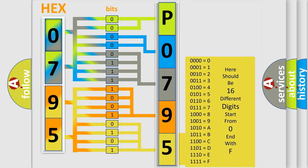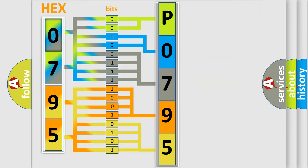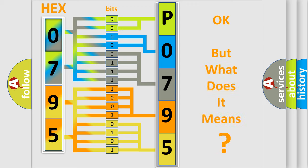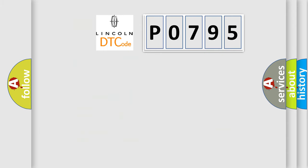We now know in what way the diagnostic tool translates the received information into a more comprehensible format. The number itself does not make sense to us if we cannot assign information about what it actually expresses. So, what does the diagnostic trouble code P0795 interpret specifically?